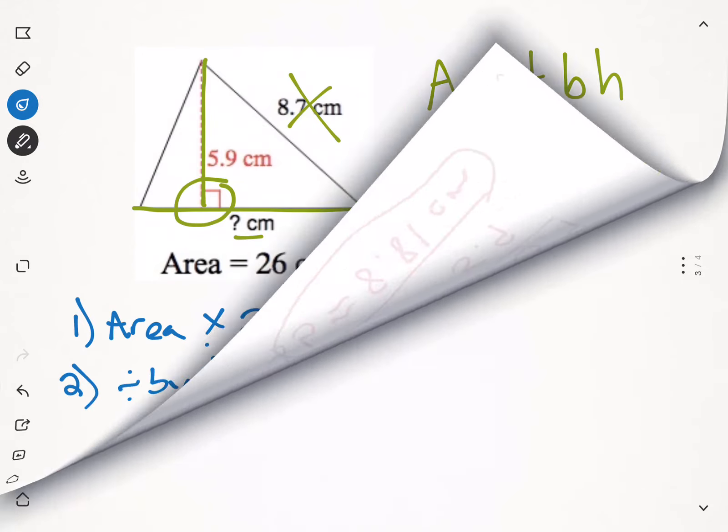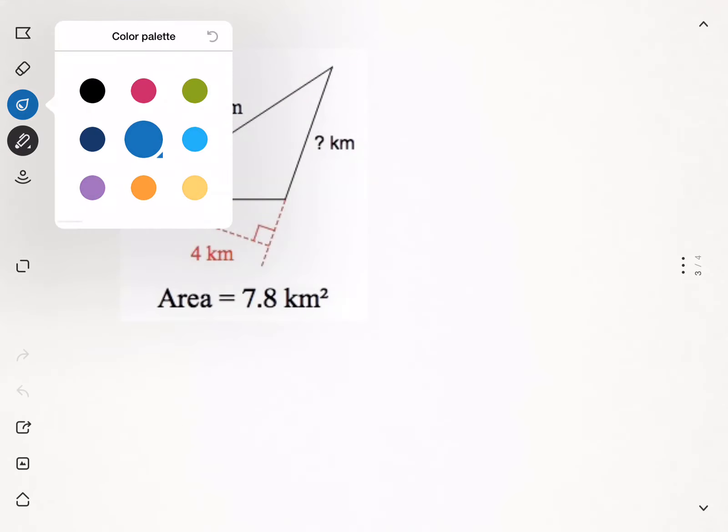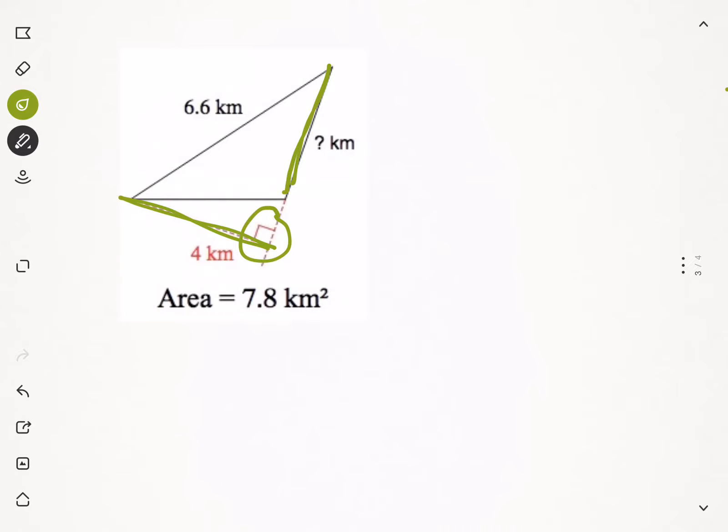Okay, next example. First step always, we're going to find that right angle. That connects our base with our height. And this 6.6 is extra information. I start with the formula.